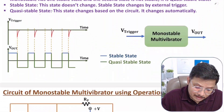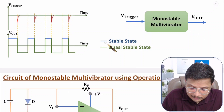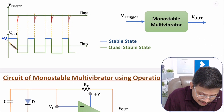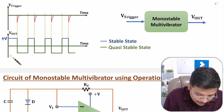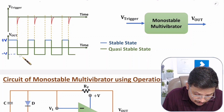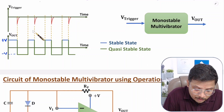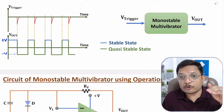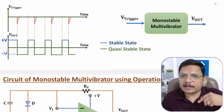Let me explain this with the monostable multivibrator block diagram where we are giving a triggering input. By blue color we have stable state and by green color we have quasi-stable state. If plus V voltage is the stable state, then to change this state we need to give a trigger — a negative going pulse. That changes plus V to minus V. This is the quasi-stable state, and from minus V back to plus V happens automatically without any trigger.